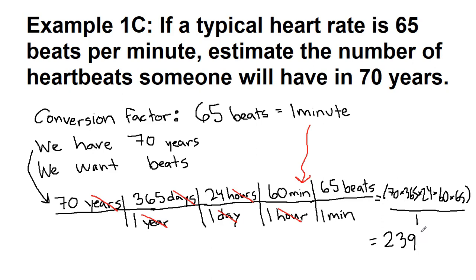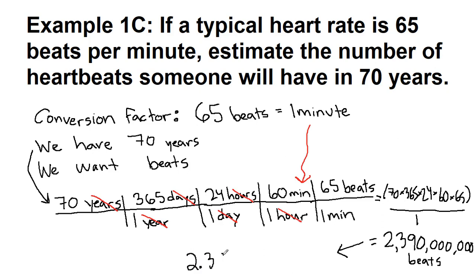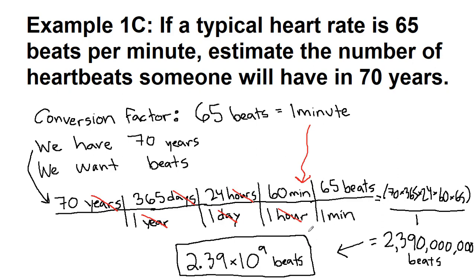Many students struggle with significant figures when there's no decimal place, but we still apply significant figures here because those trailing zeros are placeholders. To save time, we can write this in scientific notation: 2.39 times 10 to the ninth beats. That is actually about 2.4 billion beats in a 70-year span of time.